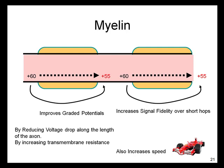Myelin increases both the speed and the signal fidelity of voltage changes over short hops by increasing transmembrane resistance. Without myelin, the current and voltage is lost across the membrane. Current loss across the membrane has the effect that less of the voltage signal is electrotonically transmitted along the length of the axon. This makes it less likely and more time-consuming for the membrane further along the axon to reach the threshold to trigger a new action potential.